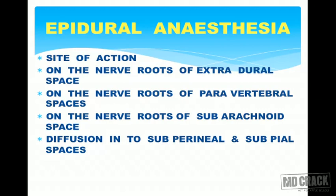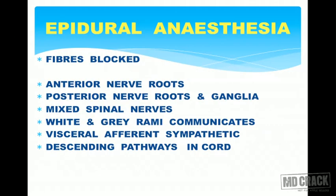The sites of action can be divided into four types: nerve roots of extradural space, nerve roots of paravertebral space, nerve roots of subarachnoid space, and by diffusion into sub-perineural and sub-pial spaces. The fibers blocked after giving epidural anesthesia — important from an MCQ point of view — are: anterior nerve roots, posterior nerve roots and ganglia, mixed spinal nerves, white and gray rami communicantes, visceral afferent sympathetic, and descending pathways in the cord.